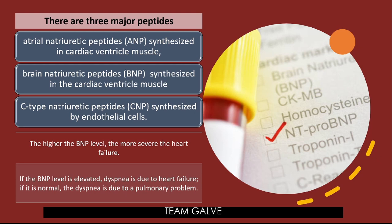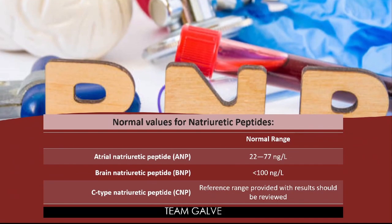Normal values for natriuretic peptides: atrial natriuretic peptide (ANP) — 22 to 77 nanograms per liter; brain natriuretic peptide (BNP) — less than 100 nanograms per liter; C-type natriuretic peptide (CNP) — reference range provided with results should be reviewed.